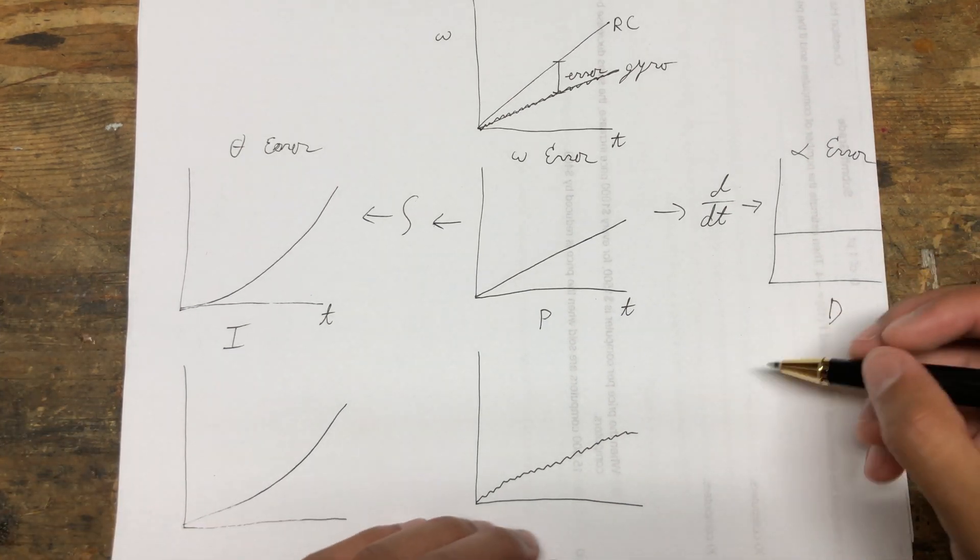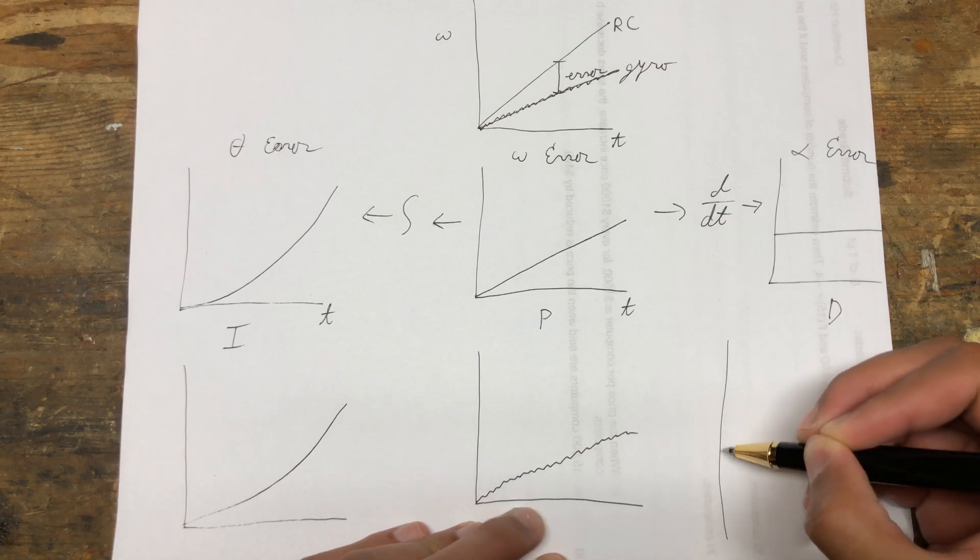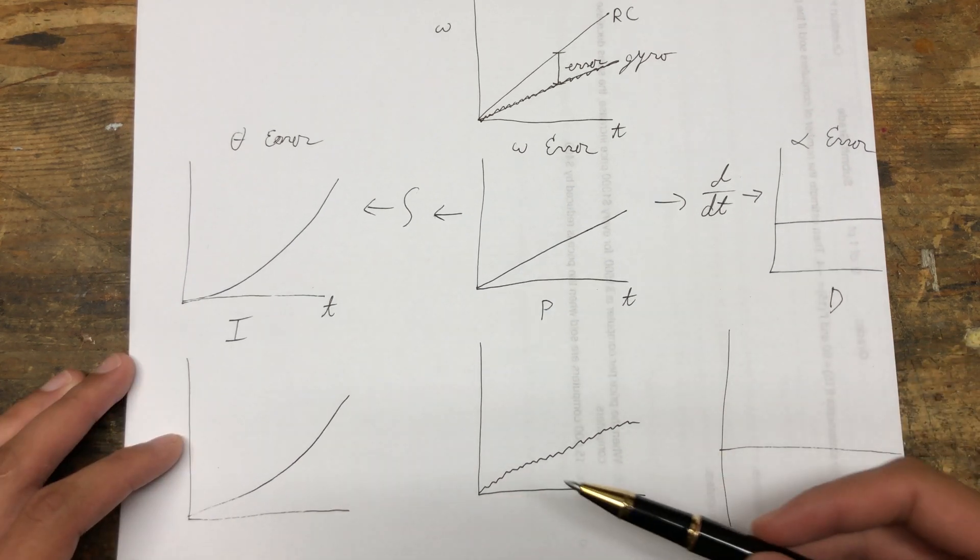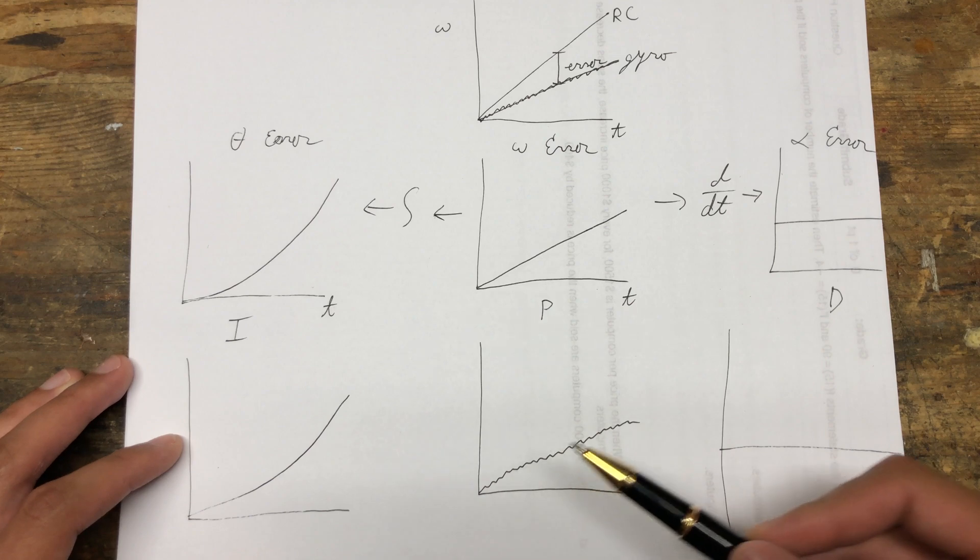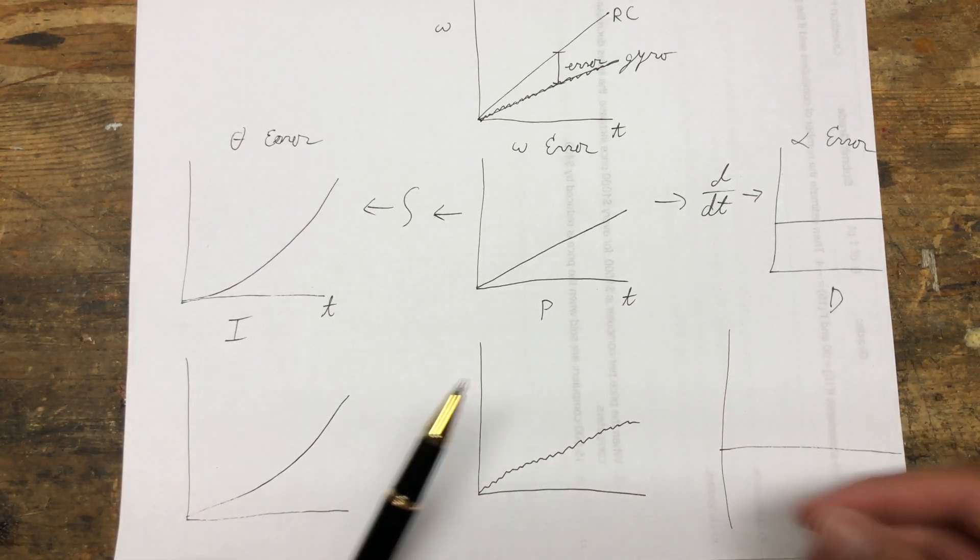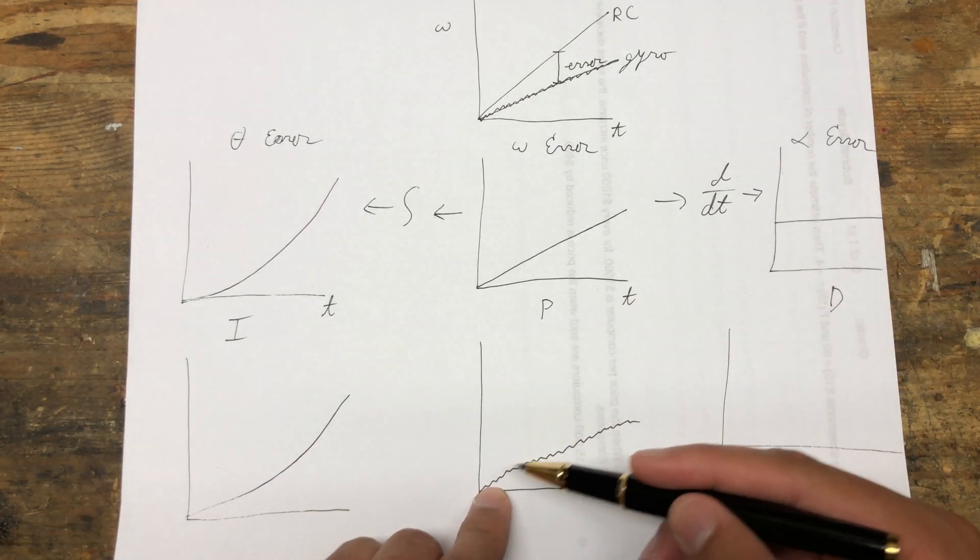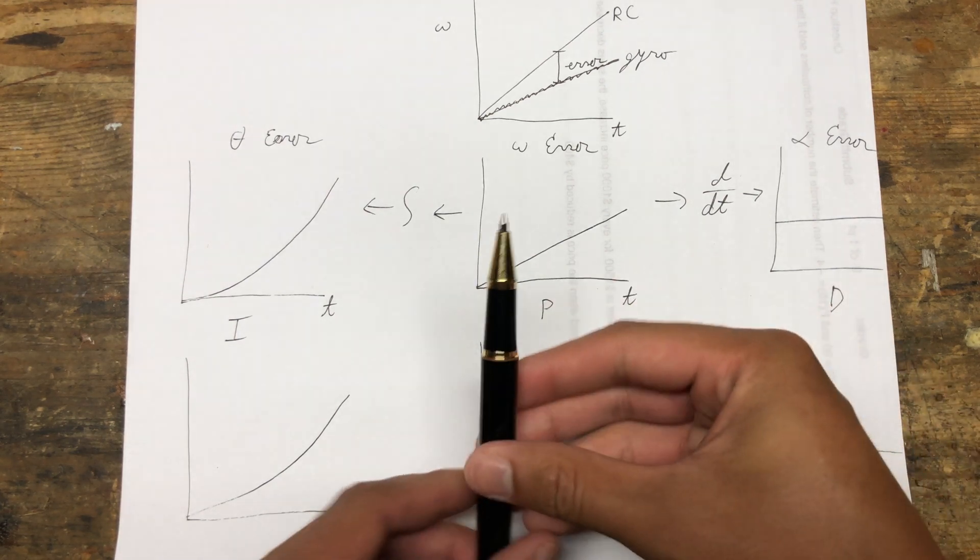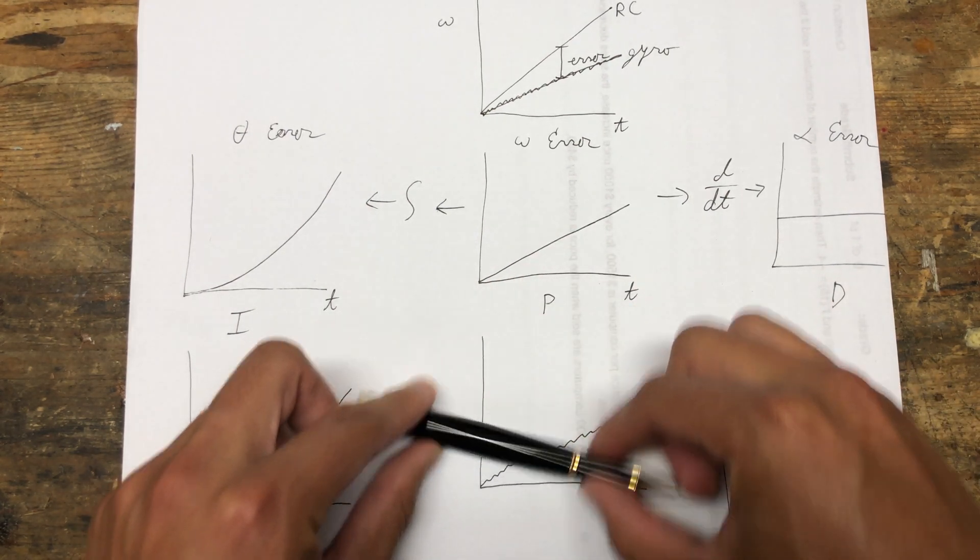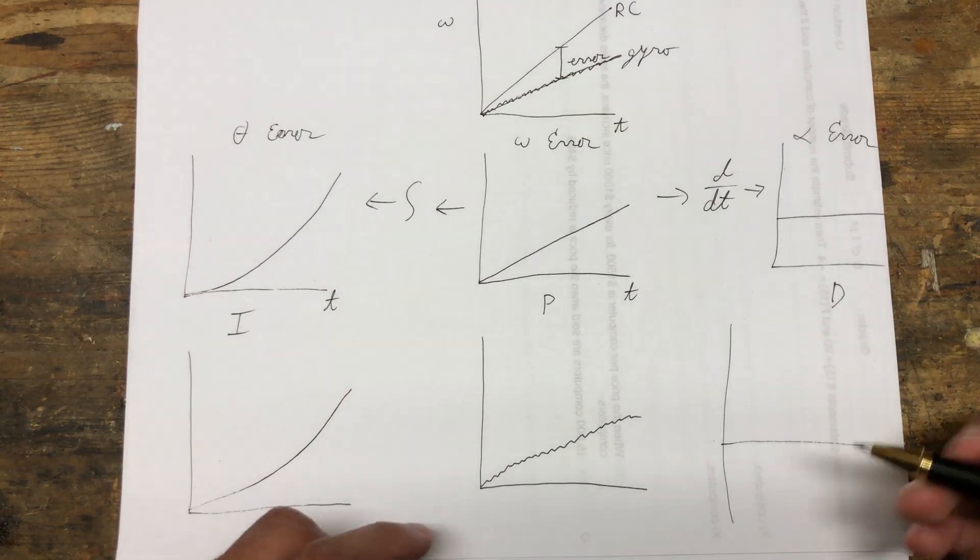However, if we go the other direction and we look at the D-term, we are taking the derivative of the angular velocity error. That means, once again, we're looking at the slope. Because there's just this little bit of noise, it's positive, then negative, then positive, then negative, then positive, then negative as time goes on.